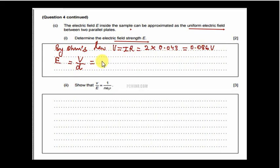So just plug in the values. Using the formula E is equal to V by d, we write it here 0.086 upon 10 centimeter, which means 0.10 meters. So we get the answer as 0.86 volt per meter.